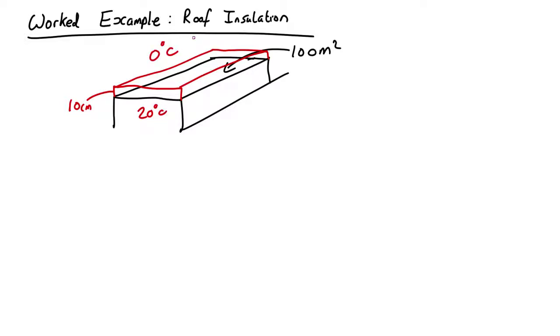The temperature inside the house is 20 degrees centigrade and outside is 0 degrees centigrade. So what we want to work out is how much heat is going to escape through the roof. Now we'll need to make a few assumptions. The first assumption we're going to make is that everything is in steady state.